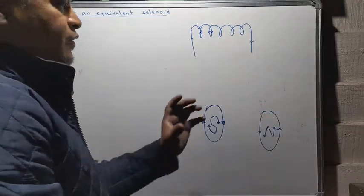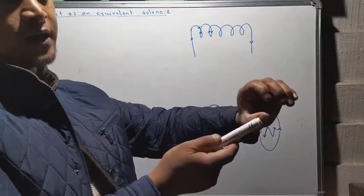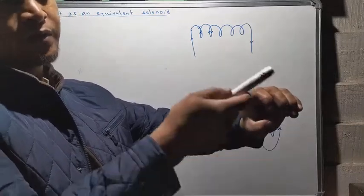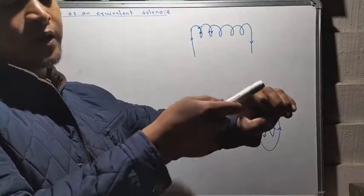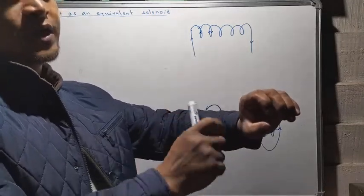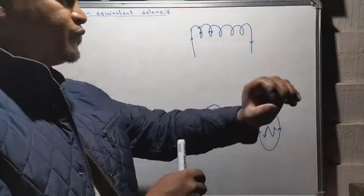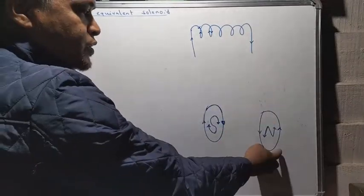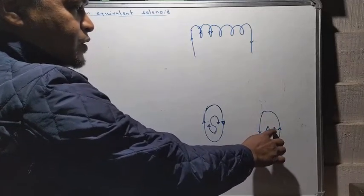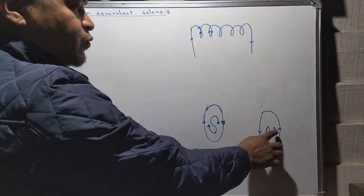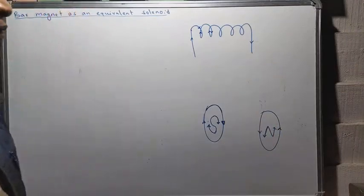Similarly, if the current in the coil is passing in the anti-clockwise direction, then that face of the coil will behave like a north pole. The arrows here are up, up, down, down - which forms an N-shape, meaning it is a north pole.